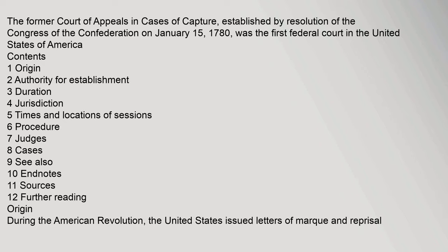The former Court of Appeals in Cases of Capture, established by resolution of the Congress of the Confederation on January 15, 1780, was the first federal court in the United States of America. Contents: 1. Origin, 2. Authority for Establishment, 3. Duration, 4. Jurisdiction, 5. Times and Locations of Sessions, 6. Procedure, 7. Judges, 8. Cases, 9. See Also, 10. Endnotes.